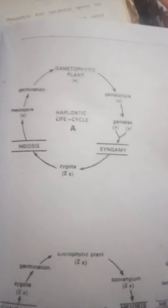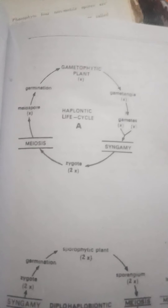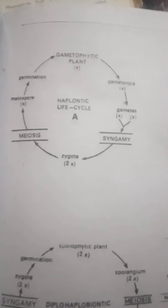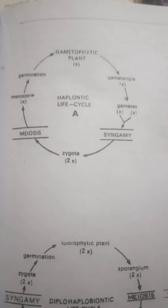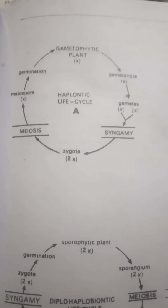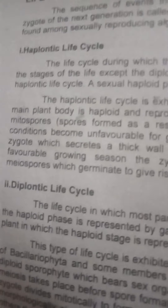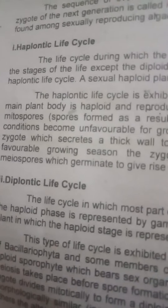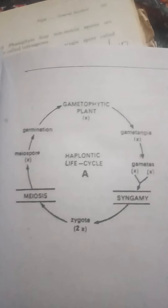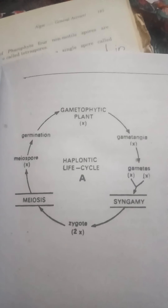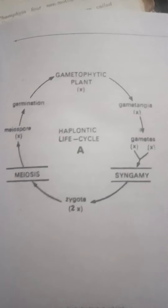In the haplontic life cycle area, organisms have a haploid life cycle. They are simple and haploid — this is called the haplontic life cycle. This diagram shows a plant life cycle.